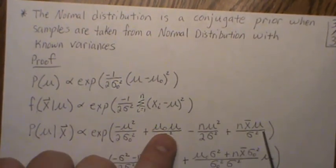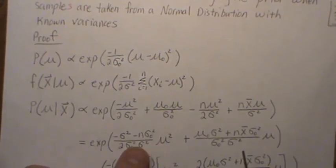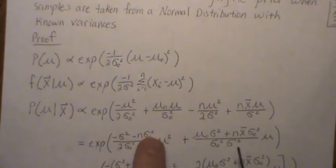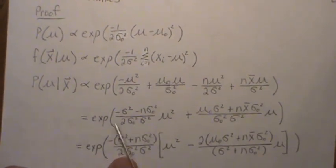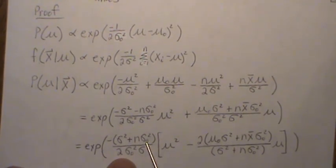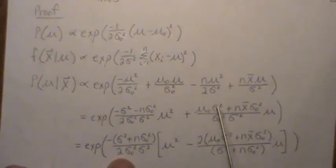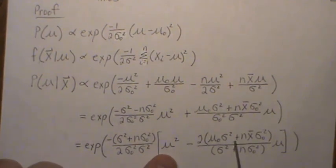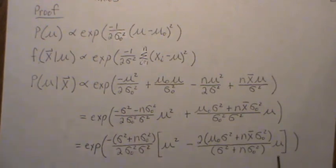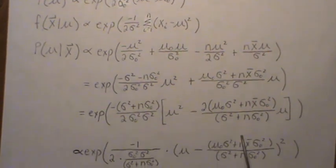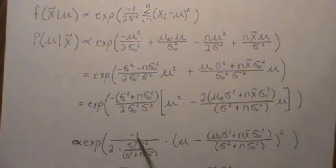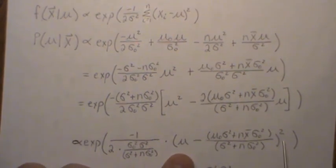We combine the mu squared terms and the mu terms, then factor out a common coefficient. We complete the square: dividing the linear coefficient by two and squaring it gives the mean of the posterior. Adding and subtracting that quantity allows us to form a perfect square. The extra piece from completing the square is a constant we can factor out. So we're left with something proportional to a form where we have mu minus some quantity squared in the exponent.